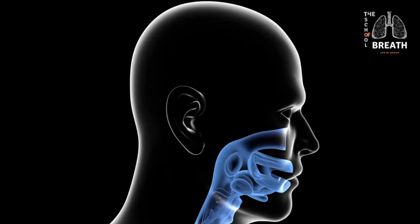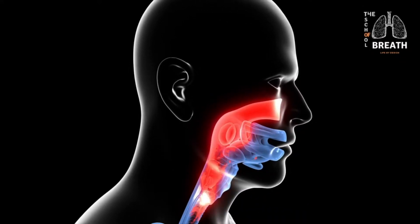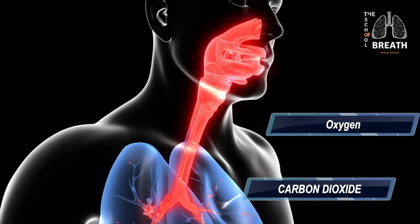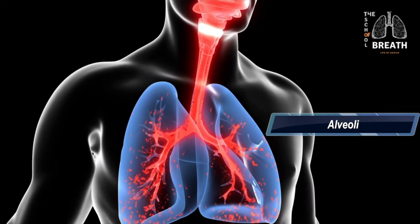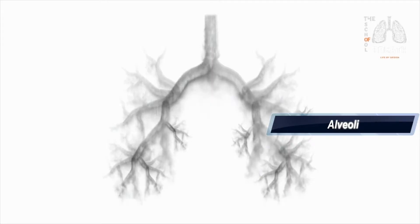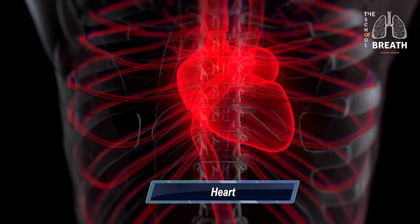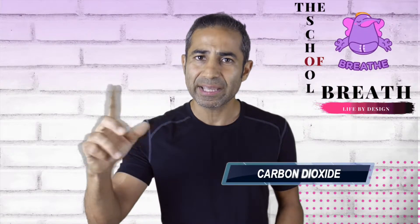Until now, you and I were taught the primary function of the respiratory system is to take in oxygen and eliminate carbon dioxide. Inhaled oxygen enters the lungs and reaches the alveoli, passes quickly through into the blood, and is pumped by the heart into your whole body. Similarly, carbon dioxide enters through the bloodstream into your lungs and is then exhaled.